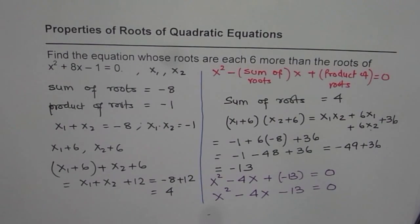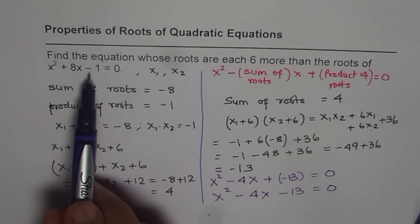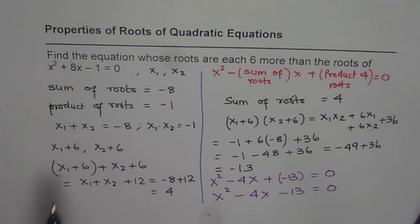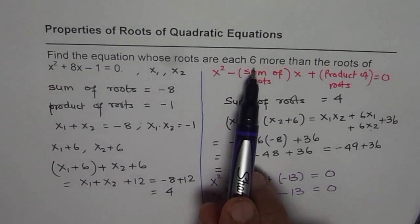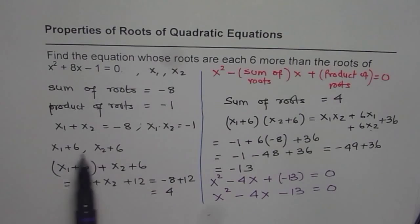So let's go through this once again. Let us say x₁ and x₂ are the roots, then the sum is -8, the product is -1. Now the roots of the equation to be found is 6 more, so let that be x₁ + 6 and x₂ + 6. So these are the new roots. So that is the new equation.